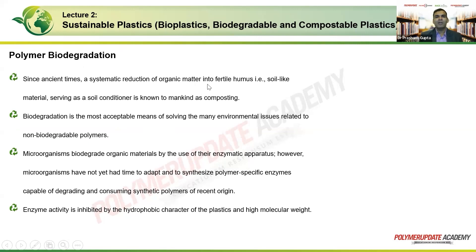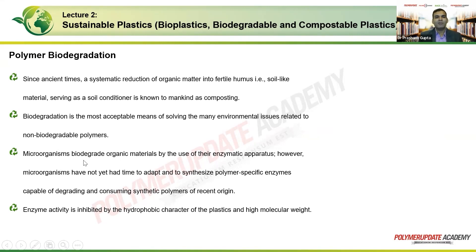The reduction of organic matter to fertile humus — a soil-like material serving as a soil conditioner — was known to mankind as composting, dating back centuries. We have long used organic matter, turning it into fertile humus and adding it to soil as a soil conditioner. Biodegradation is the most acceptable means of solving many environmental issues related to non-biodegradable polymers.